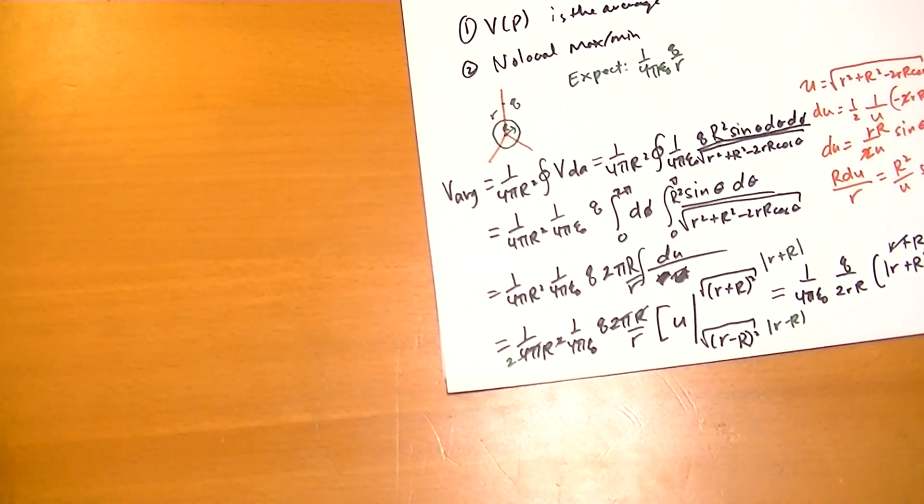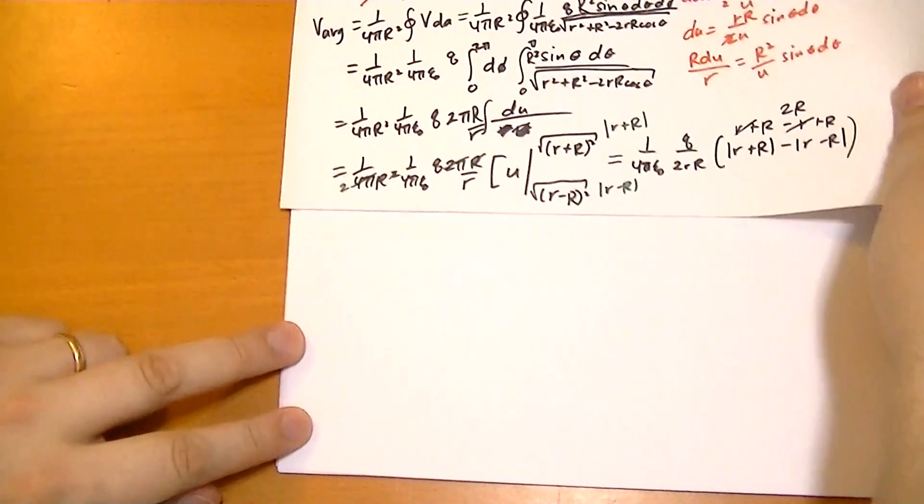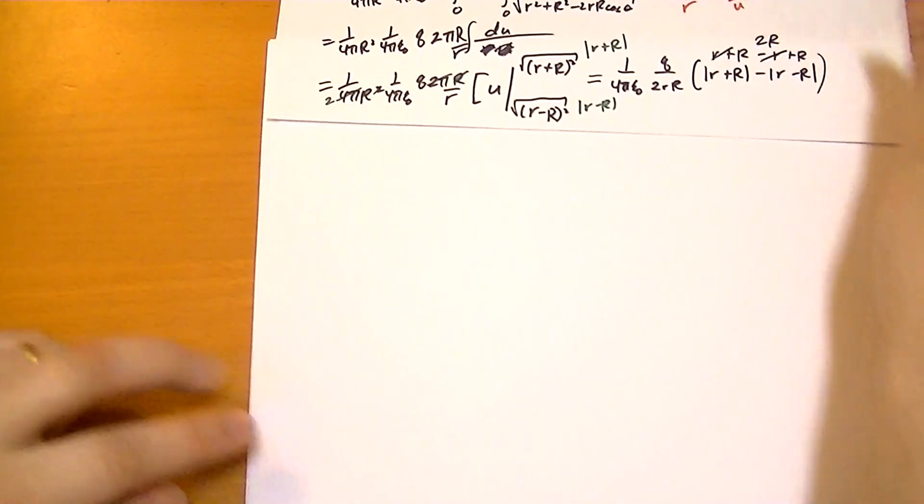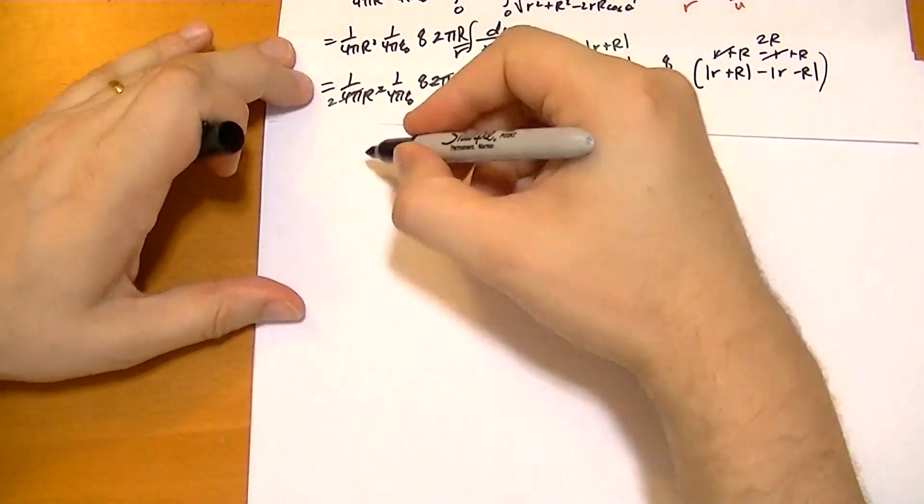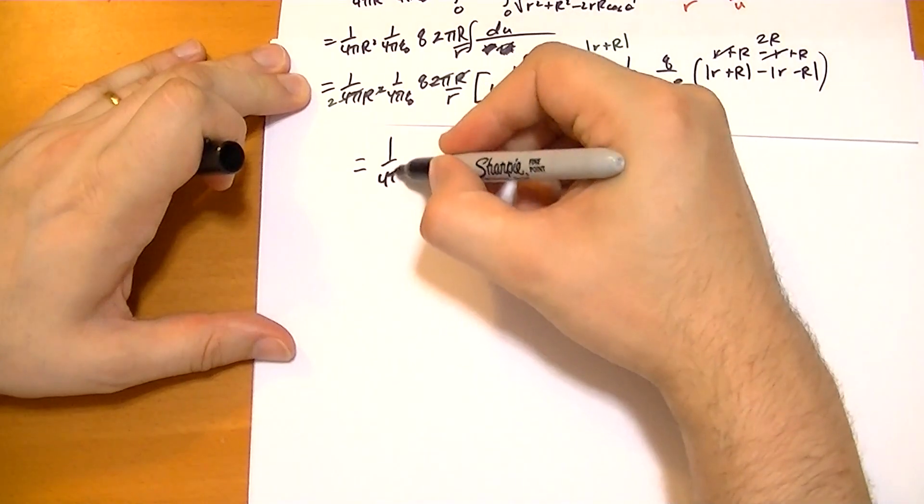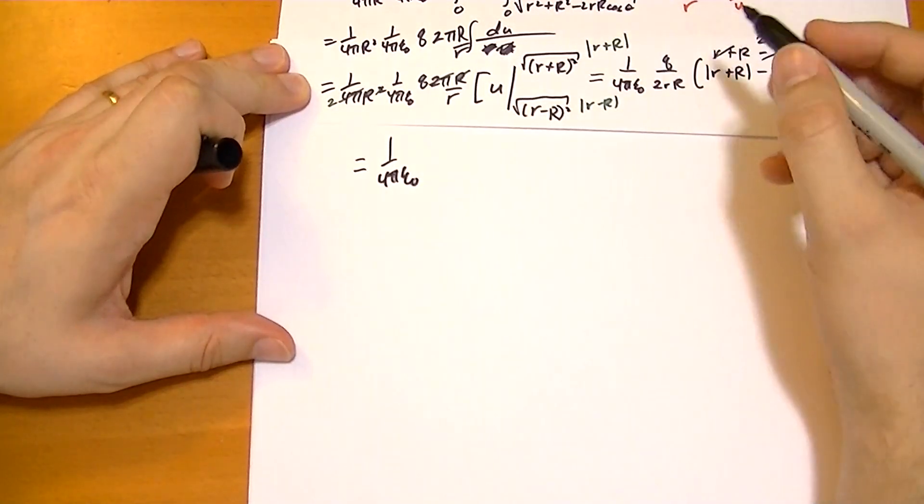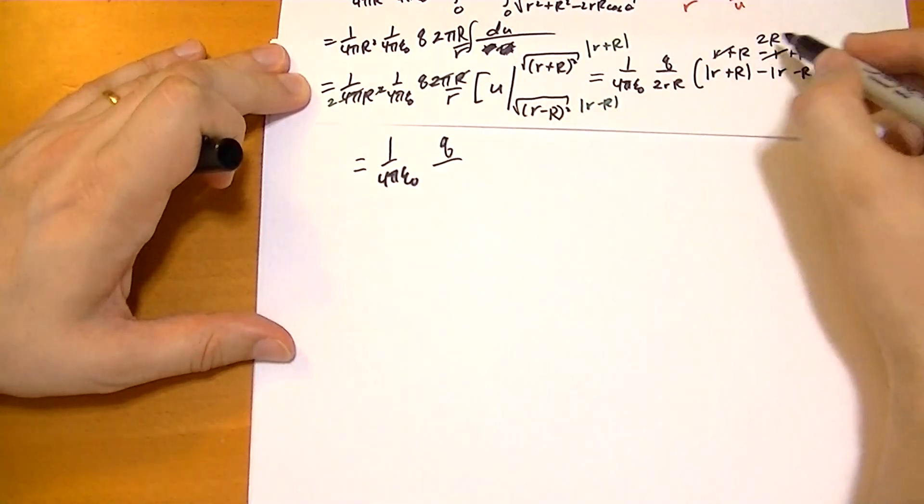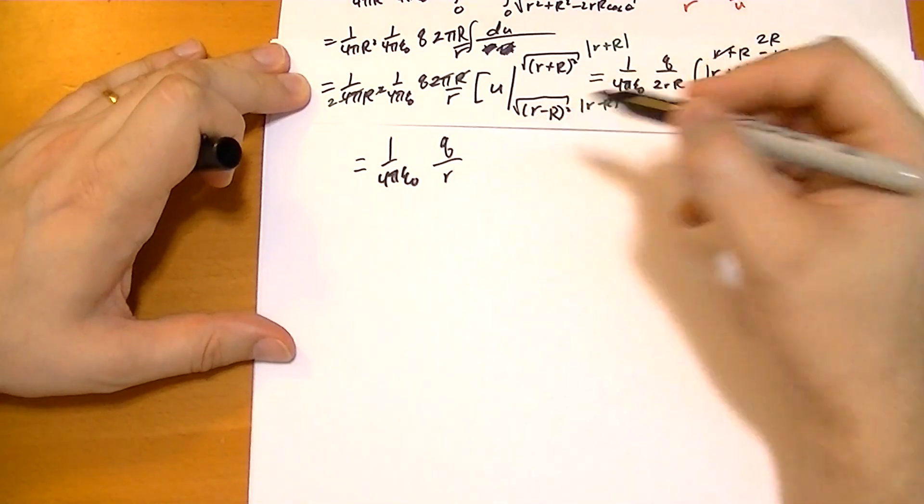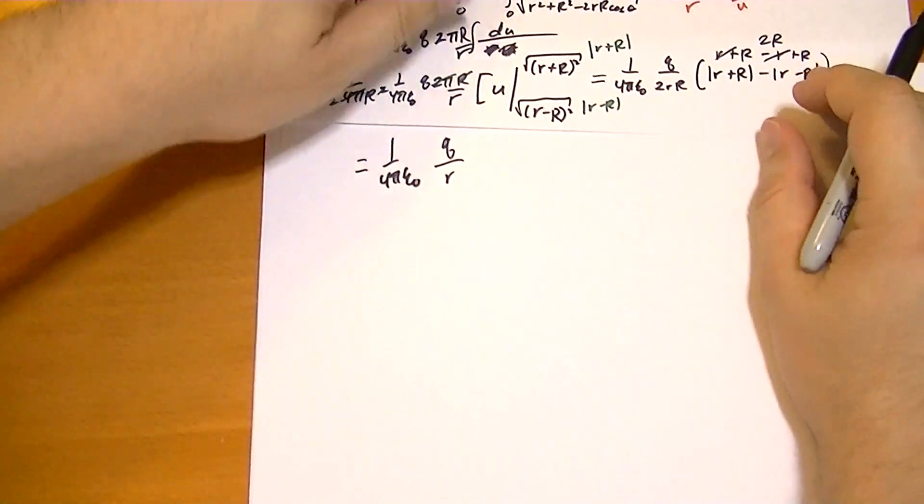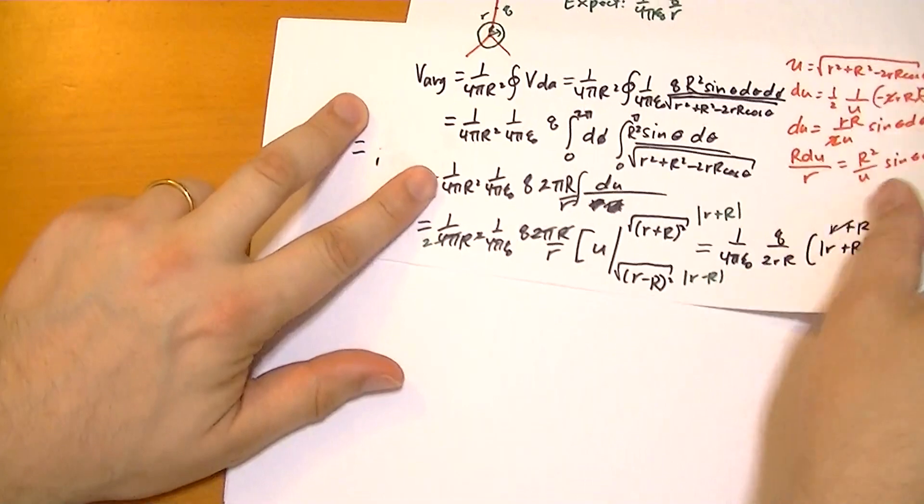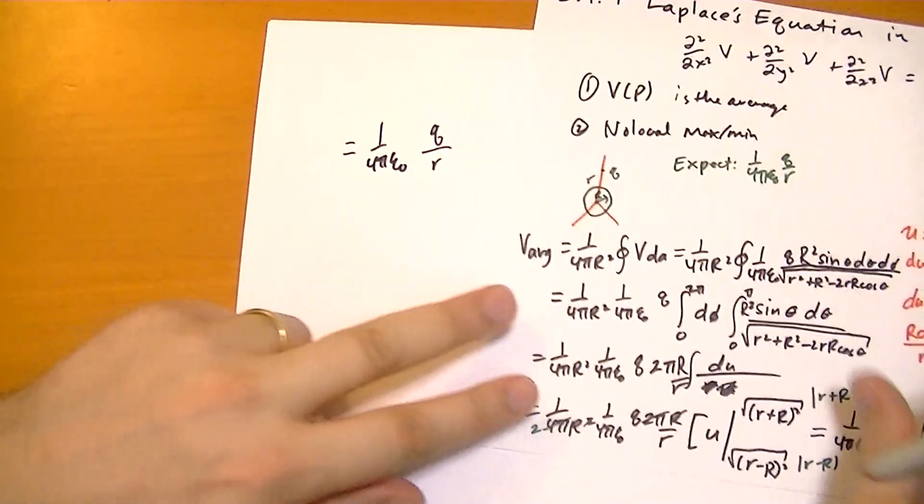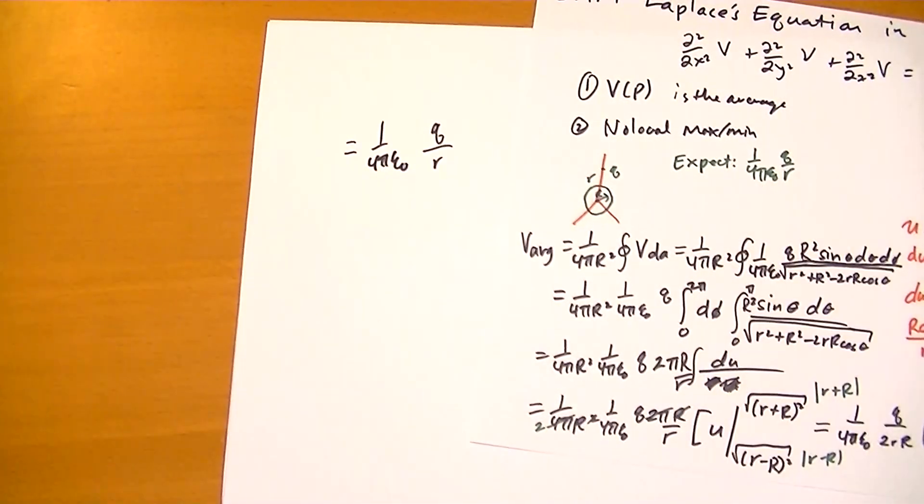So wrapping things up here, we get the potential of the average, q divided by, the 2r cancels the 2r. So we have just an r on the bottom. And lo and behold, that's exactly what we expected it to be. So there we go. It turns out they're the same.